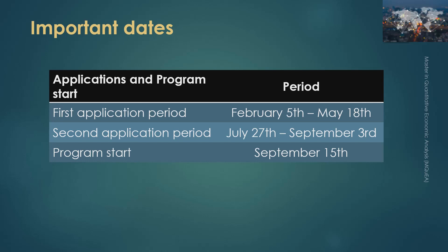Important dates are: the first application period between February 5th and May 18th, the second application period between July 27th and September 3rd, and the programme will start on the 15th of September of each academic year.